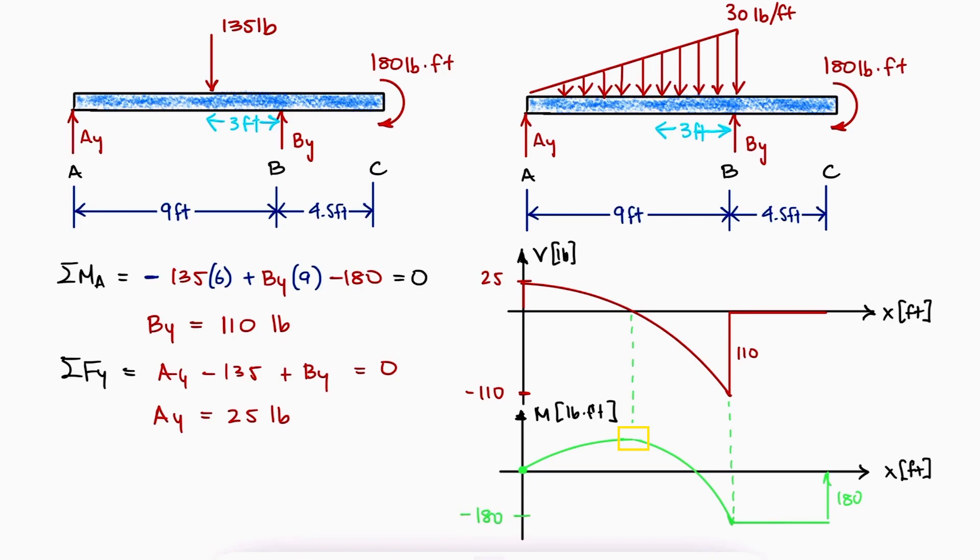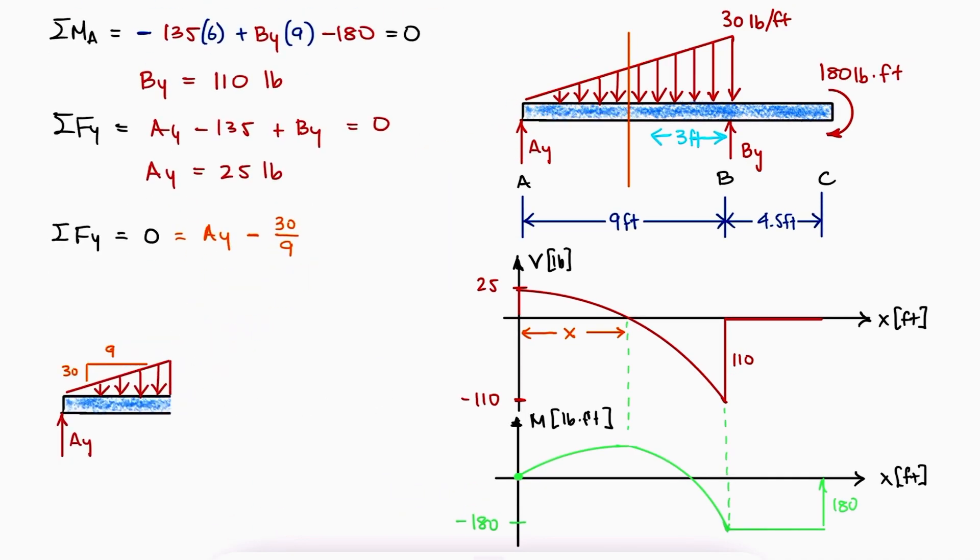To find the maximum value, which is where the slope is 0, we first need to find the X location. If the sum of forces in Y is equal to 0 at that point, we would have a positive AY and a negative distributed load that has a slope of 30 over 9, which means that the Y value at X is 30 over 9 times X.